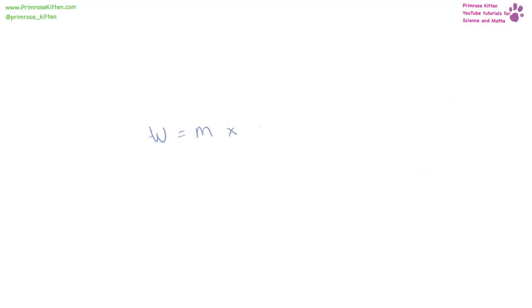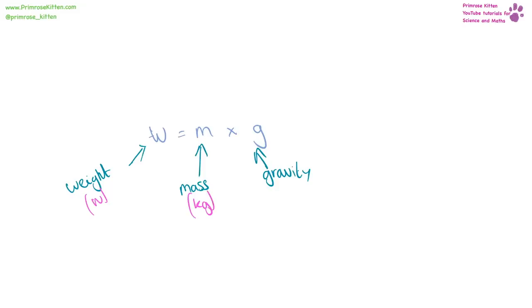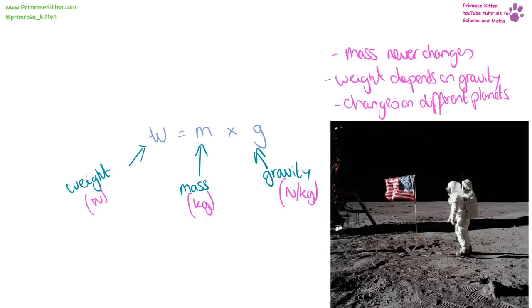Your weight is not the same as your mass because weight equals mass times gravity. Weight is measured in newtons, mass in kilograms, and gravity in newtons per kilogram. Your mass will never change, but your weight will change depending on the planet and gravity — which is why on the moon they were basically weightless and could jump around.